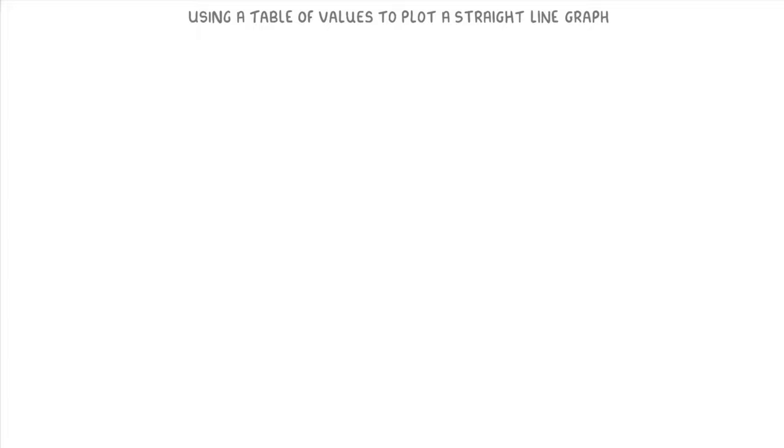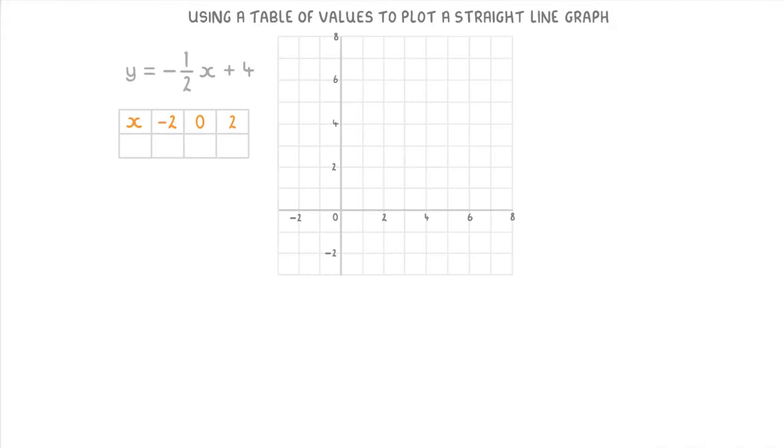In today's video, we're going to cover how you can use a table of values to plot a straight line on a graph. For example, if we had the equation y equals minus a half x plus 4, we could make a table with some random x values on the top row, and then use the equation to find out what the corresponding y value would be for each of these x values.